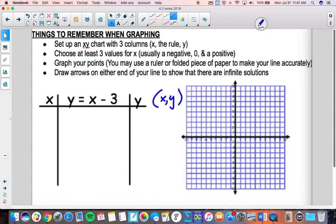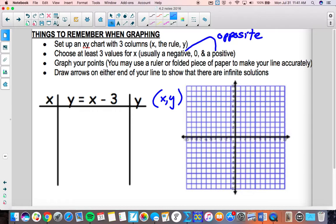Now some general rules. I want you to choose at least three values for x. I'd suggest a negative, a zero, and a positive. And I'd also strongly recommend that you make these numbers opposites. So if you choose for your negative, negative three, I'd recommend that you choose positive three for your positive. And then in between those you would have zero.